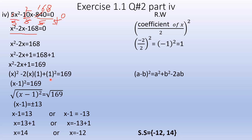We write a minus b whole square: with a equal to x and b equal to 1, so x minus 1 whole square equals 169. Taking square root on both sides, the square root cancels out. Square root of 169 is 13. So x minus 1 equals plus or minus 13. Therefore x equals 14 or x equals minus 12. The solution set is {minus 12, 14}.